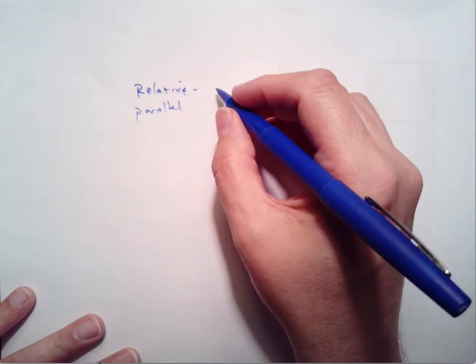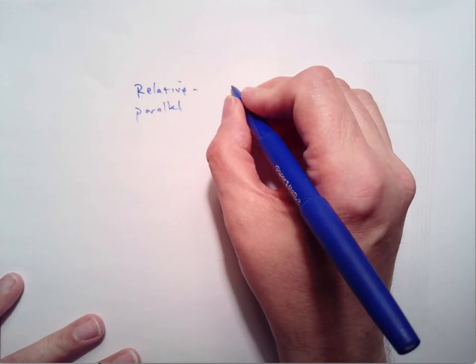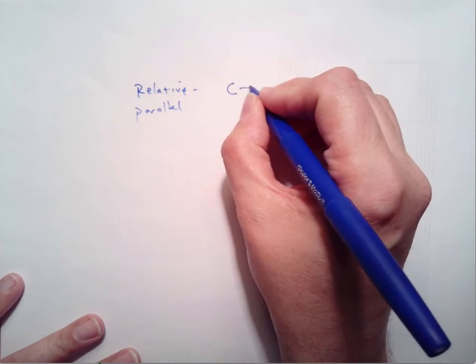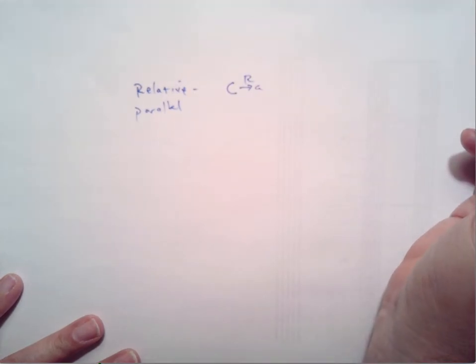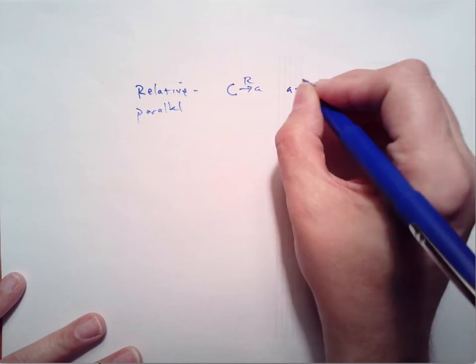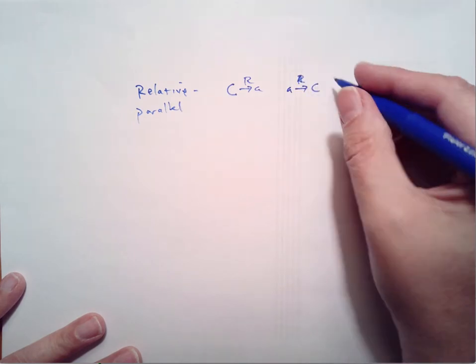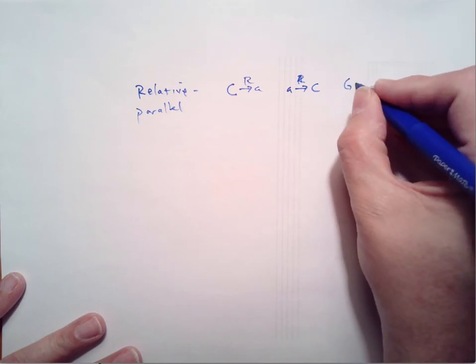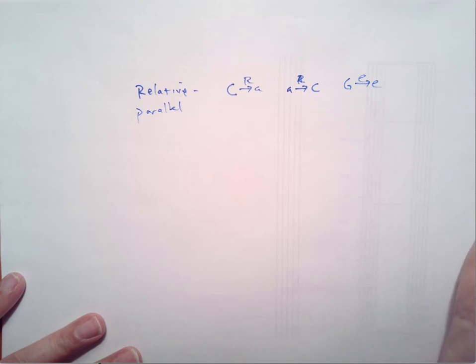Relative are major and minor keys that share the same key signature. For example, C major to A minor, that relationship is relative. Likewise, A minor to C major, that relationship is relative. G major to E minor is a relative relationship.